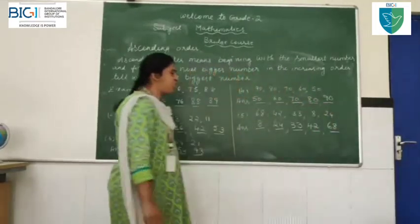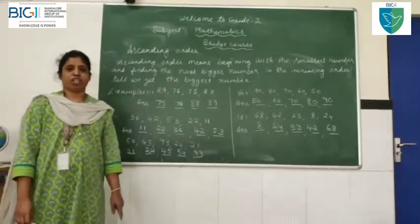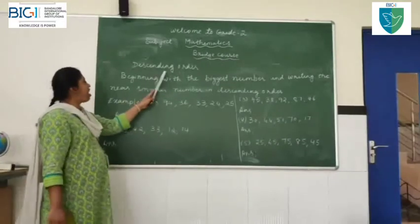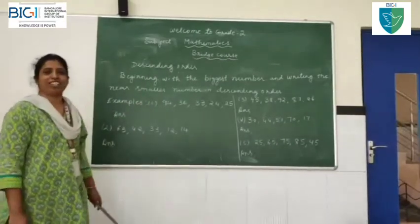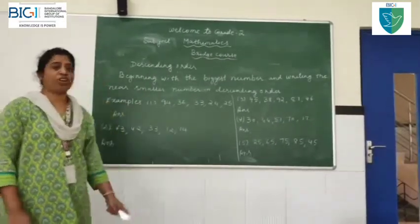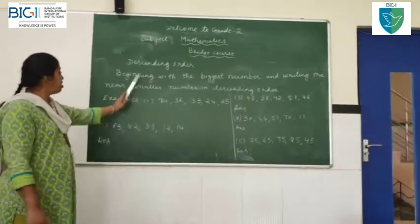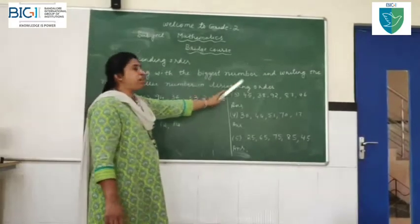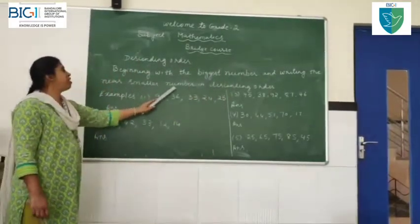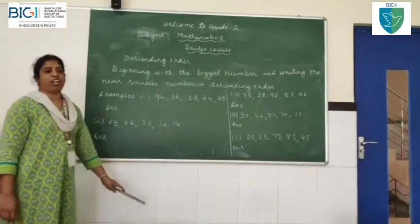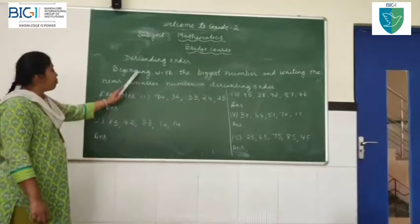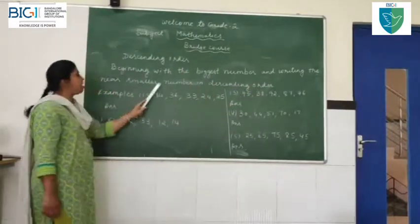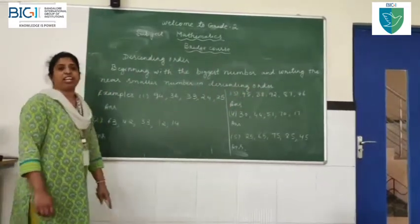I hope you all understood, children. Now, I am going to descending order. Now, I am teaching you descending order. Descending order means beginning with the biggest number and writing the near smaller number in descending order. Shall I repeat? Beginning with the biggest number and writing the near smaller number in descending order.